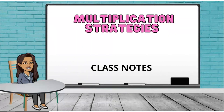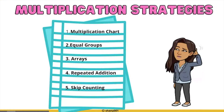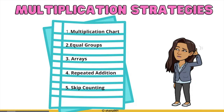Hello boys and girls. Today we'll be talking about multiplication strategies. We're going to look at five ways we can multiply. You may use a multiplication chart, put the numbers in equal groups, make arrays, use repeated addition, or skip counting. Let's get started.